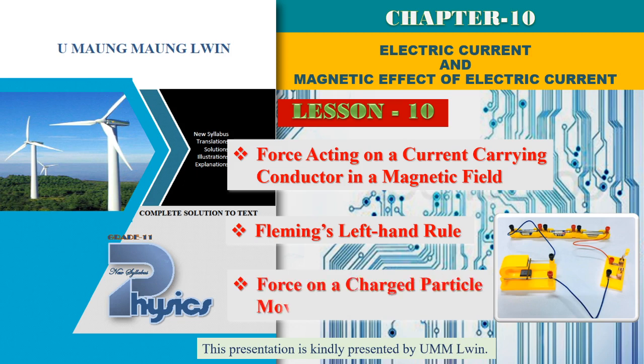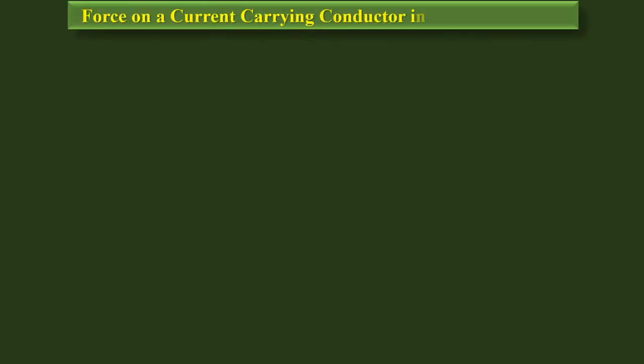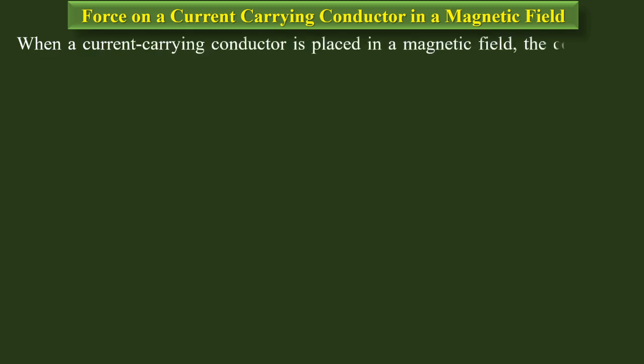And on top of the first, it is the current carrying conductor in the magnetic field. The magnetic field is the current carrying conductor in the magnetic field. The current carrying conductor is placed in the magnetic field.